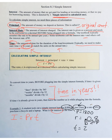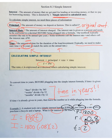Now we know what to plug in. Interest I equals principal 1800, times rate .08, times time 2. So I'm going to do 1800 times .08 times 2 in the calculator, and it comes out nicely to $288. Two hundred and eighty-eight dollars would be the interest alone for the final answer.